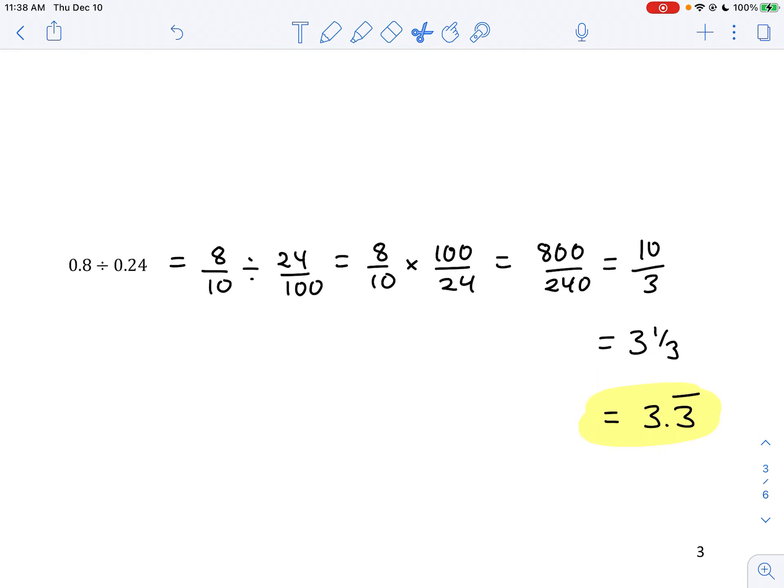This one here, similarly, we don't need any common denominators, and it's the second fraction here, the divisor, that gets inverted. Some people were inverting the dividend, which is not correct for the algorithm. And then you get this far, which I reduced to 10 thirds. And 10 thirds is 3 and a third, and I know 1 third is 0.3 repeating, so we have 3.3 repeating.